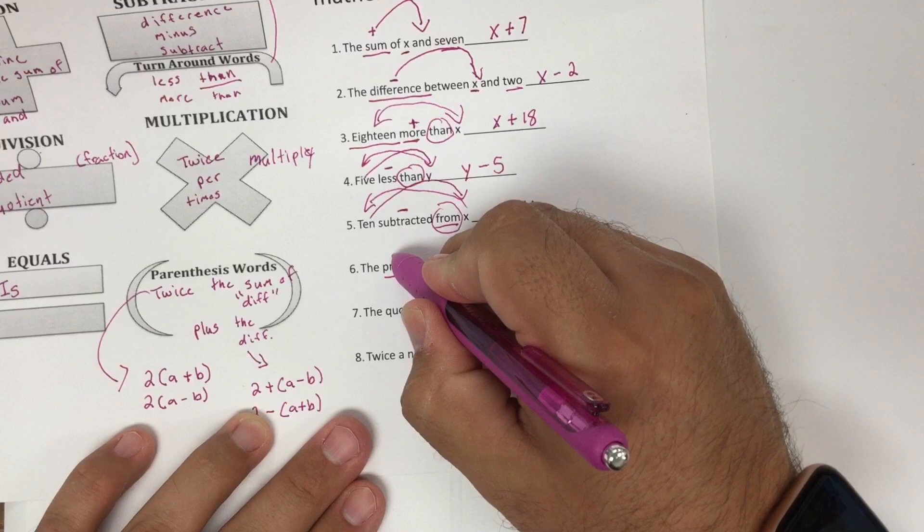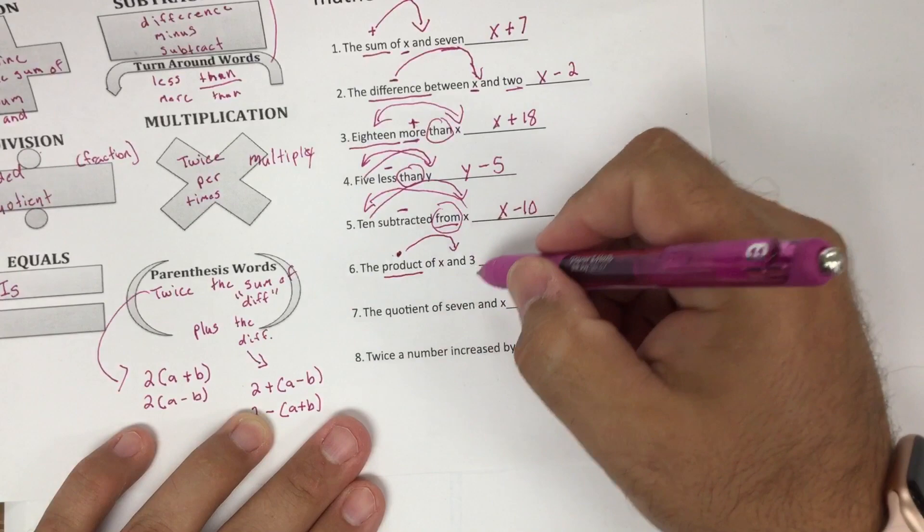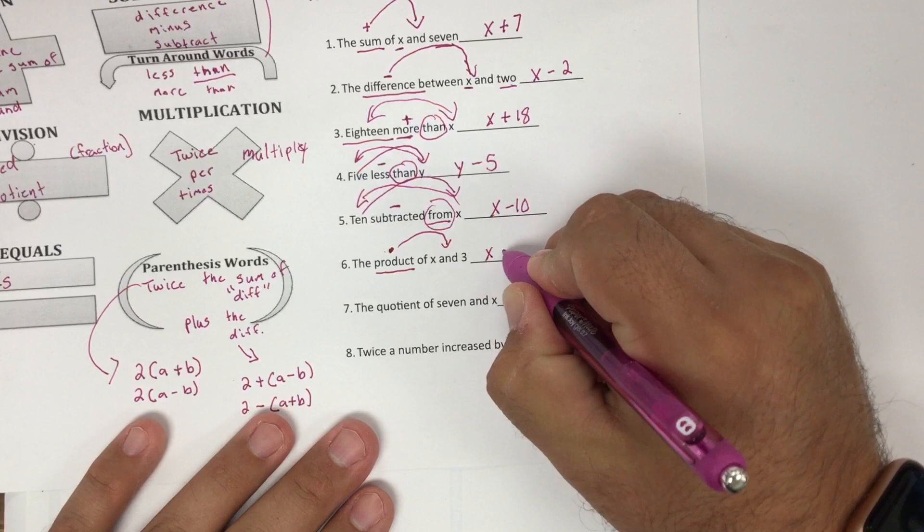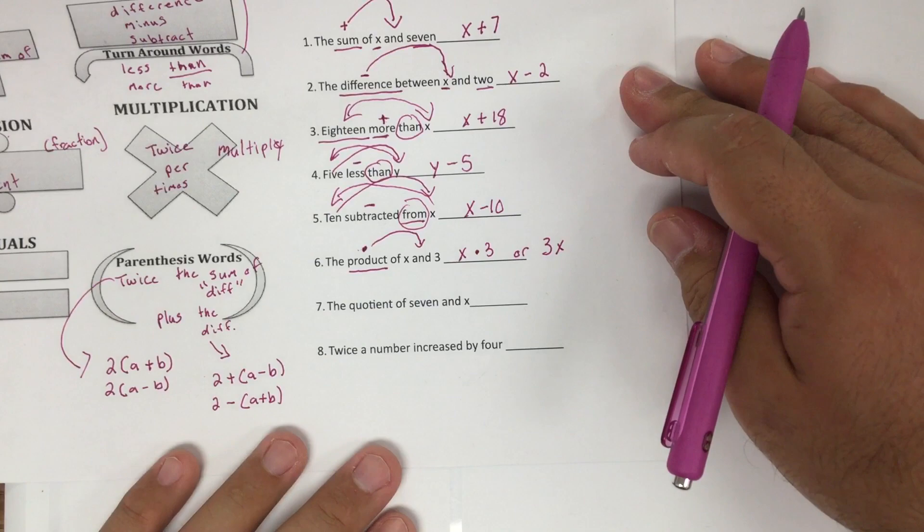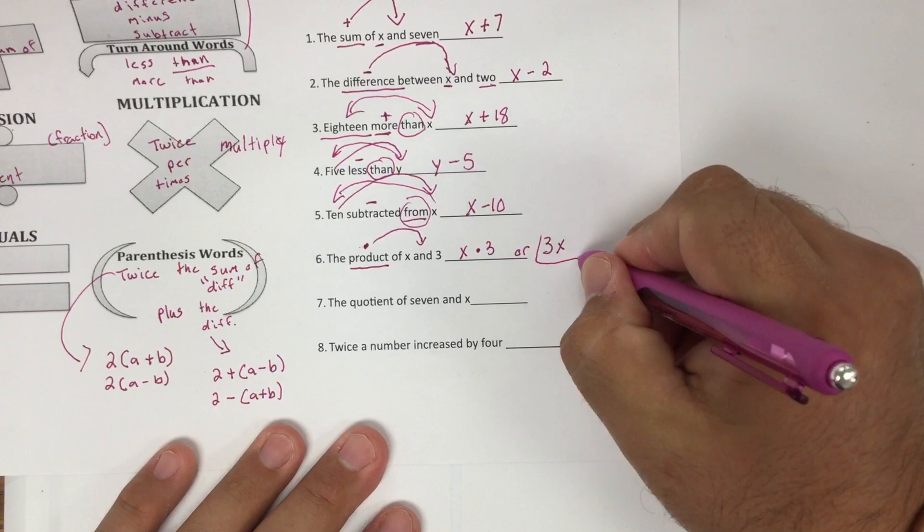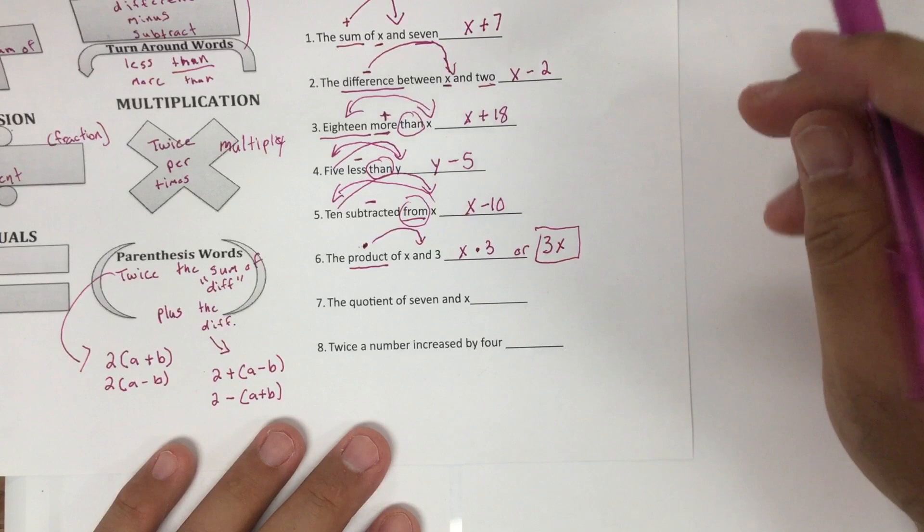The product. Product means to multiply. So I'm going to use my little dot for multiplication. That product goes here, X and three. Now there are two different ways to write this: X dot three or what most of you guys see is three X. Now in this situation, multiplication has its own property, which we call associative. You can interchange it. But this is really the way I want you to write your answer whenever you're seeing multiplication, especially with the variable.